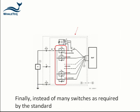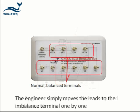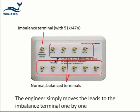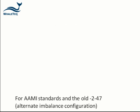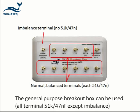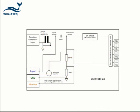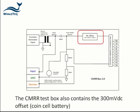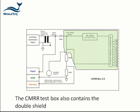Finally, instead of using many switches to create the imbalance, the engineer simply moves each lead electrode to the imbalance terminal one by one. The opposite configuration in the old 2-47 and the AIME standards is implemented using the general purpose ECG breakout box. This breakout box accesses the alternate network inside the CMRR box. The box also includes the 300 millivolt DC offset powered by a small coin cell battery, the double shield, and an adjustable capacitor as required by the standard.